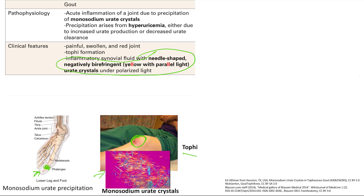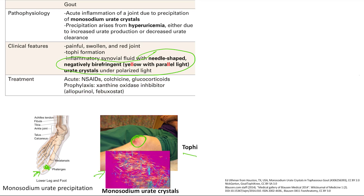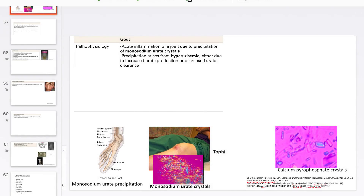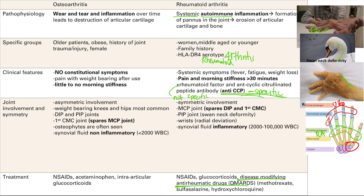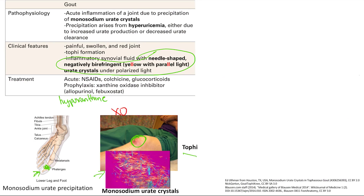Treatment is pretty simple. Acute treatment is to treat the inflammation — you hit them with NSAIDs, colchicine, or steroids. For prophylaxis, it goes back to the pathophysiology: it's just too much urate in the blood. Uric acid is produced when xanthine oxidase converts hypoxanthine into uric acid. So if you inhibit xanthine oxidase with inhibitors such as allopurinol or febuxostat, you're going to have less uric acid in the blood and evade having gout.